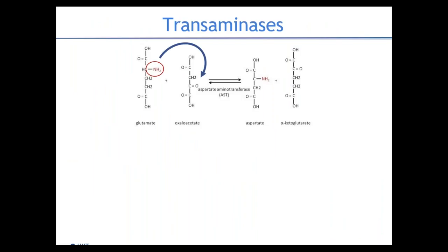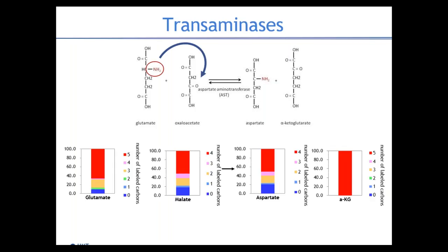Sometimes I use amino acids as checks of the data and surrogate markers. In the example of aspartate aminotransferase, the nitrogen from glutamate is transferred to oxaloacetate; the glutamate carbons become the carbons on alpha-ketoglutarate, and the oxaloacetate carbons become those on aspartate. Although we cannot detect oxaloacetate, the labeling pattern on oxaloacetate should be the same as on malate, and indeed the labeling pattern on malate mirrors perfectly the labeling pattern on aspartate. For alanine aminotransferase, the same principle applies except that the pyruvate carbons become the alanine carbons.